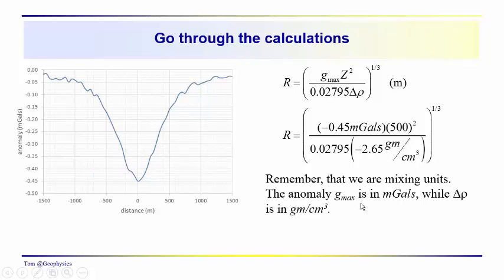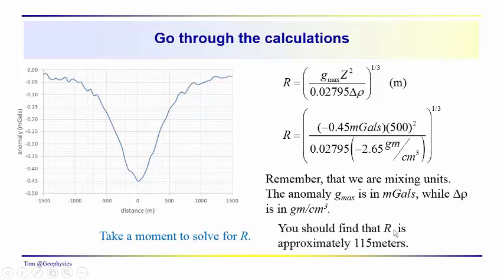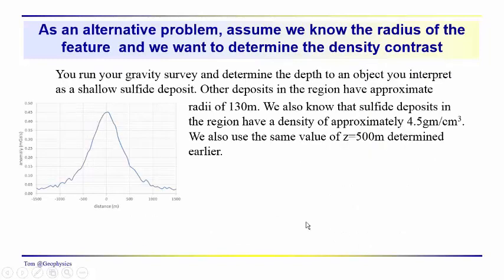We've already figured out z, so we've already gone through the curve analysis here. We're just plugging in for minus 0.45 milligal, that's the maximum, or should say minimum in this case. Our depth is 500 meters squared. We have our constant because we're working in meters, and this is our density contrast. We're mixing units with delta rho in grams per cubic centimeter and g in milligals. Take a moment and make sure you understand the setup here. If you go through the solution, you should find that R is about 115 meters. You've got a cavity which extends from about 385 meters below the surface to 615 meters beneath the surface, 230 meters in diameter.